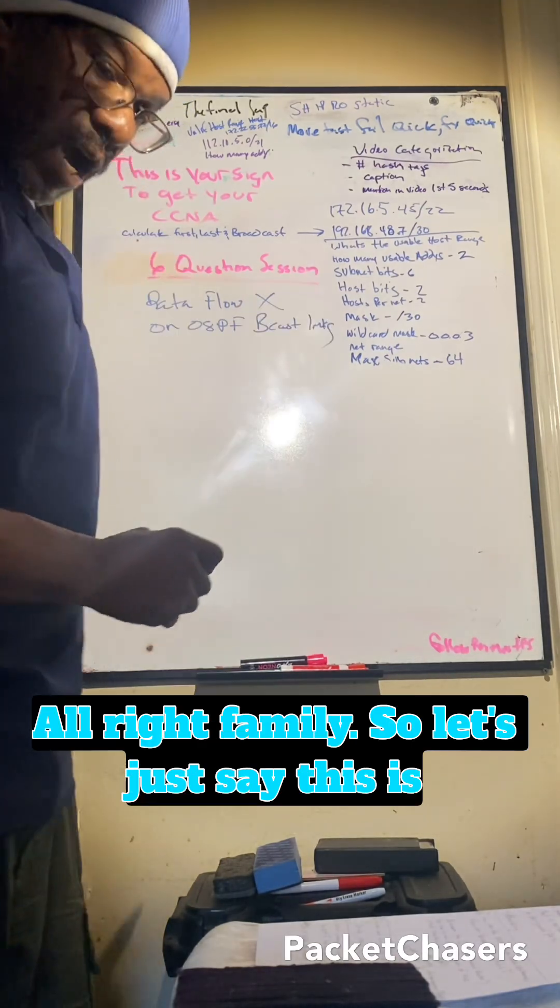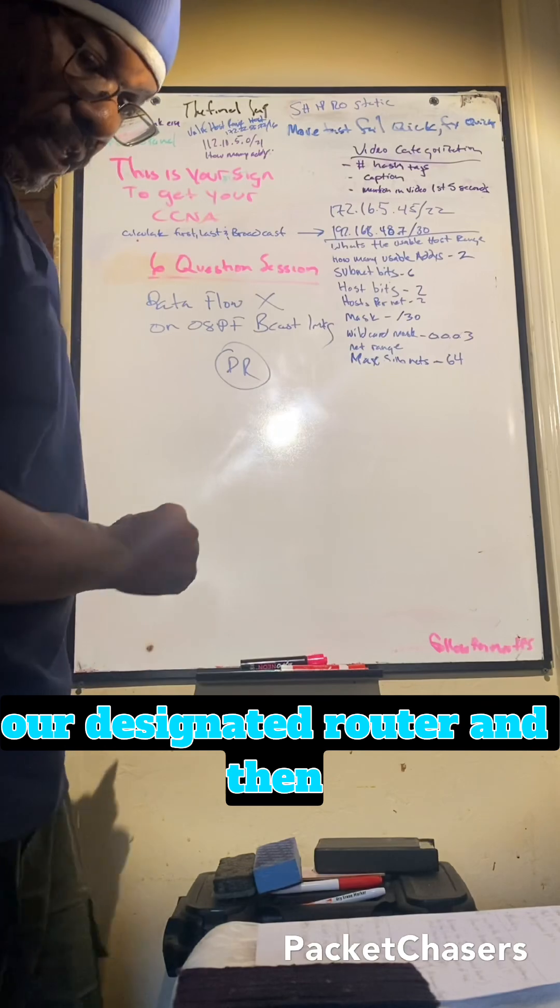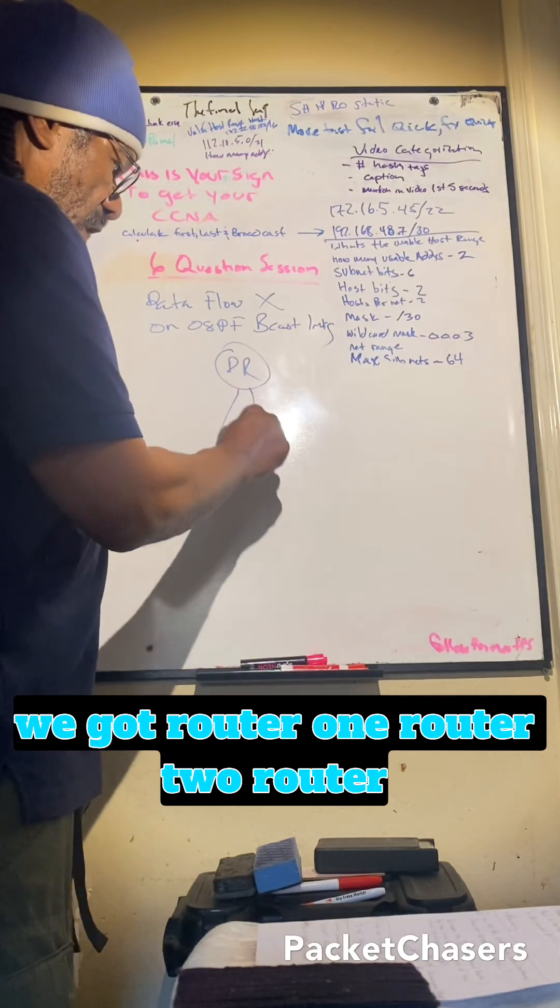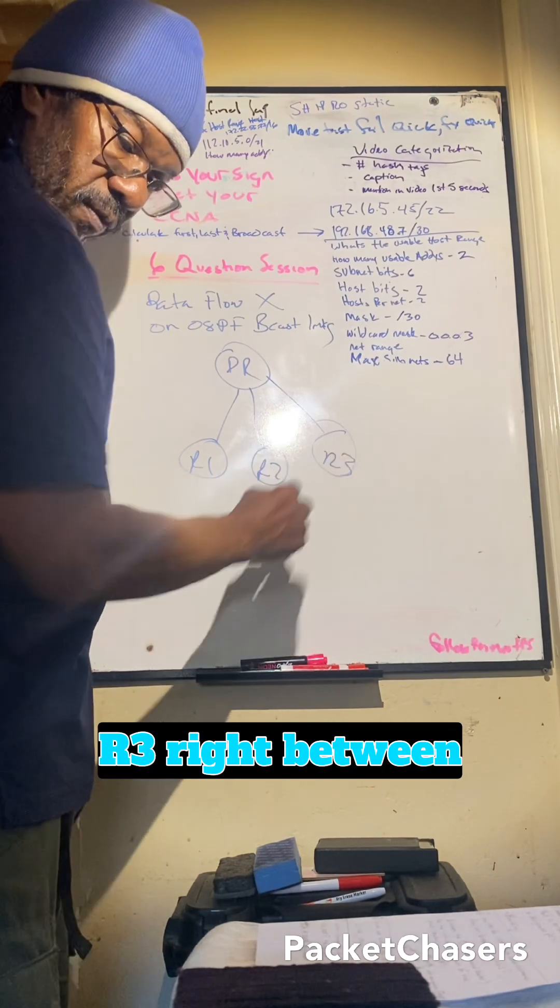All right family, so let's just say this is our designated router and then we got router one, router two, router three. R1, R2, R3, right?